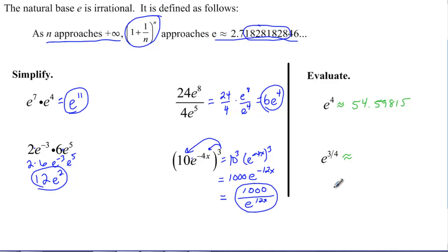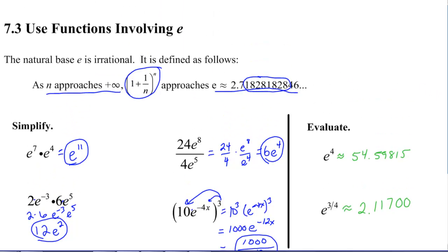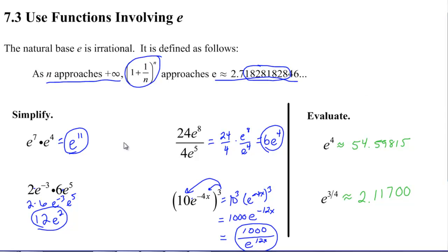And then we get e to the 3 fourths. Again, I'm going to do e to the 3 divided by 4. If you're using an 84, make sure to put that exponent in parentheses. And I got 2.117 and then a bunch of zeros. Four zeros and then 1661. So I'm just going to round it there. But those are just our decimal approximations with evaluating those expressions. So simplifying, we're going to keep in terms of e. Evaluate, we're going to plug into our calculator and figure out what those are.